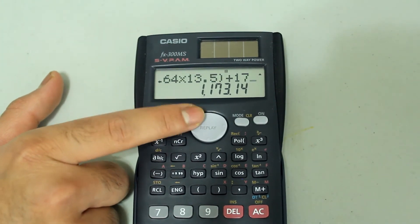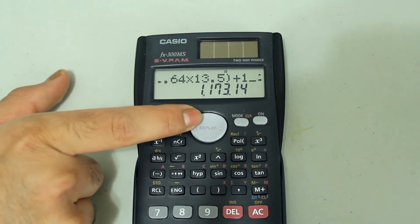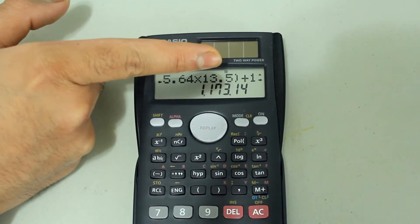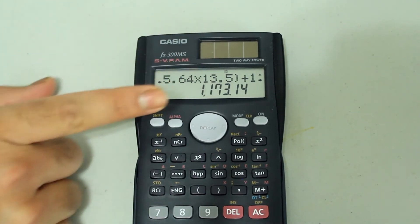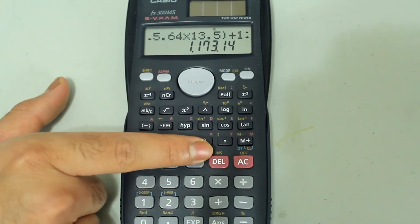Once the cursor is blinking to the right of the 7, you can keep moving the cursor, and when the cursor is blinking on the 1, press shift and the delete button to choose the insert option.